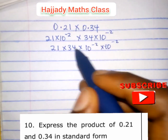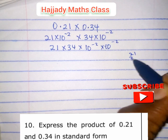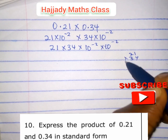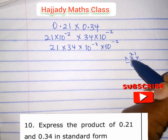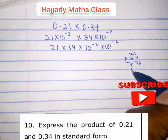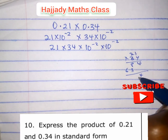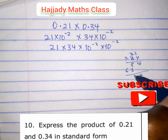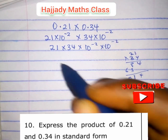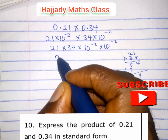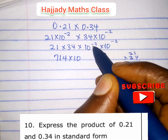21 times 34: 4 times 1 is 4, 4 times 2 is 8, 3 times 1 is 3, 3 times 2 is 6. We have 4, then 8 plus 3 gives 11, carry the 1, we have 7. So here we have 714.